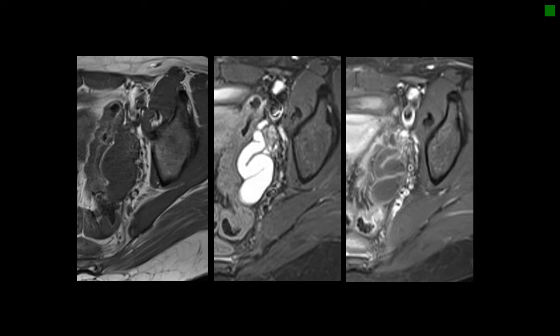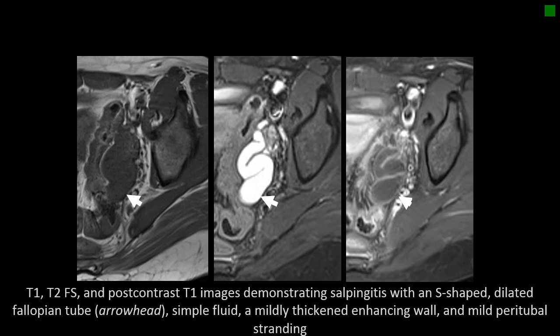Here we have a case where the patient was presenting with infectious symptoms, and we again see a dilated fallopian tube. On the T1-weighted image, the fallopian tube looks dark. On the T2-weighted image, we can clearly see this tubular structure filled with T2 hyperintense fluid. On the post-contrast image, we can see the enhancing walls of the fallopian tube and quite a bit of stranding in the parametrial fat around the tube.